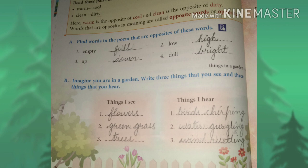Number 2: Water gurgling — the sound of water when there is a fountain. W-A-T-E-R gurgling, G-U-R-G-L-I-N-G. Number 3: Wind rustling — rustling is the sound of wind. W-I-N-D rustling, R-U-S-T-L-I-N-G.